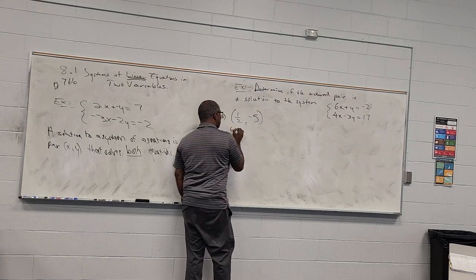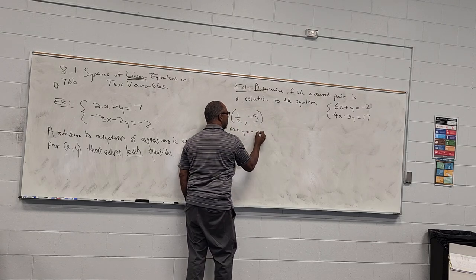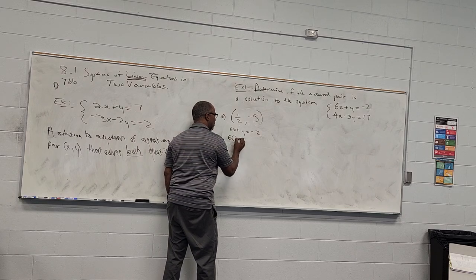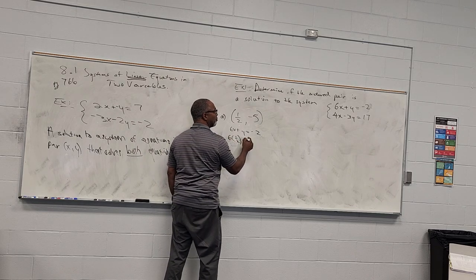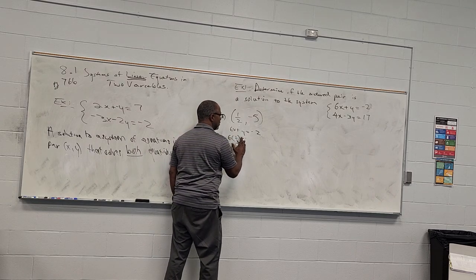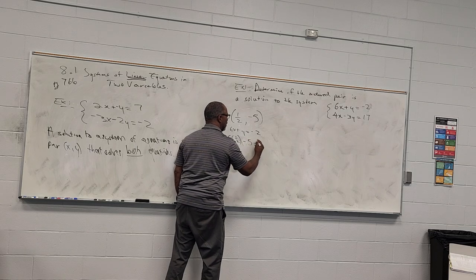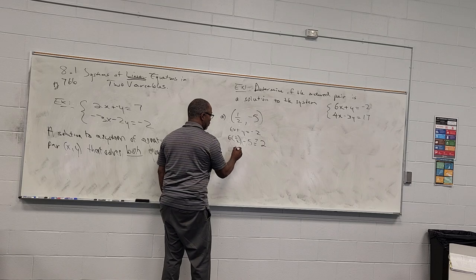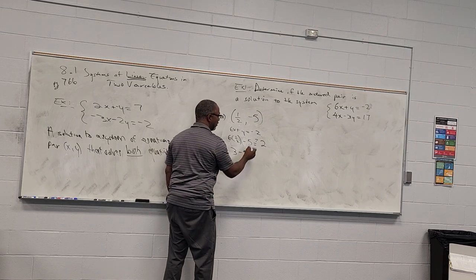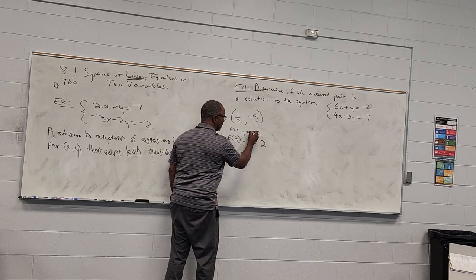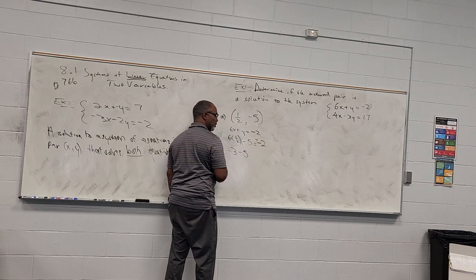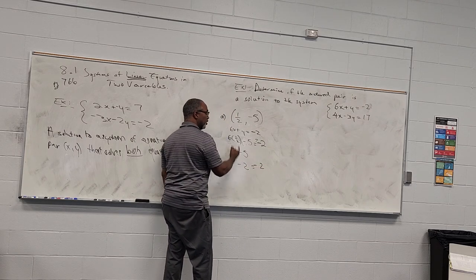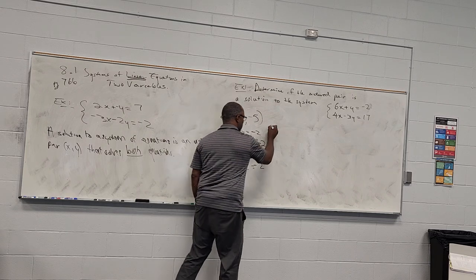I'll check the first equation, 6x plus y equals negative 2. Where I have x, I put one-half; where I have y, I put negative 5. Six times one-half is 3, and 3 minus 5 is exactly negative 2. So yes, they're equal — this point is a solution to equation one.